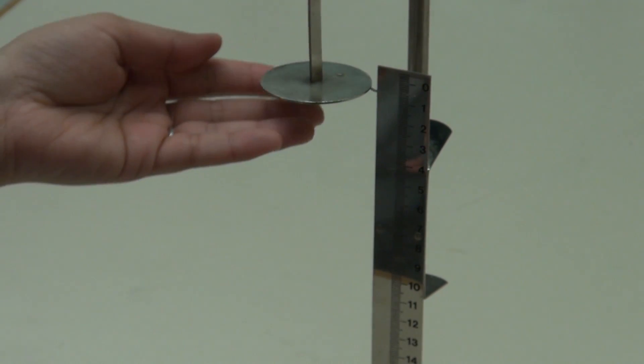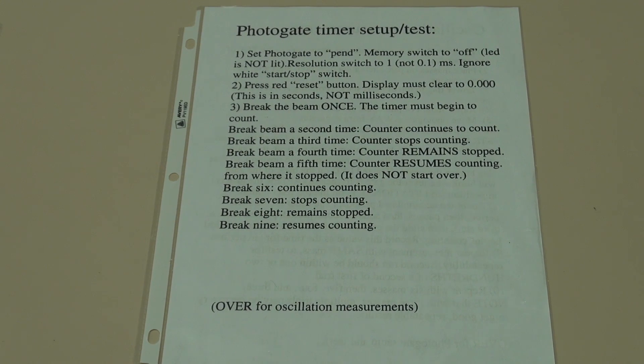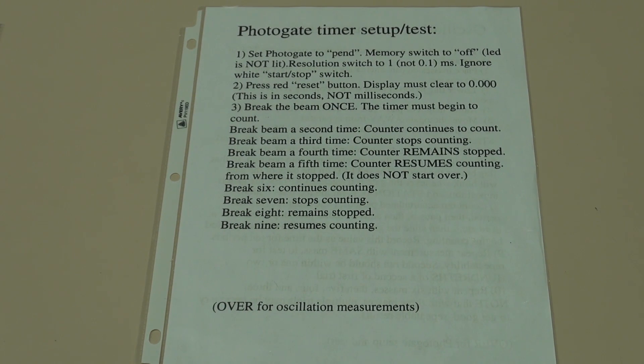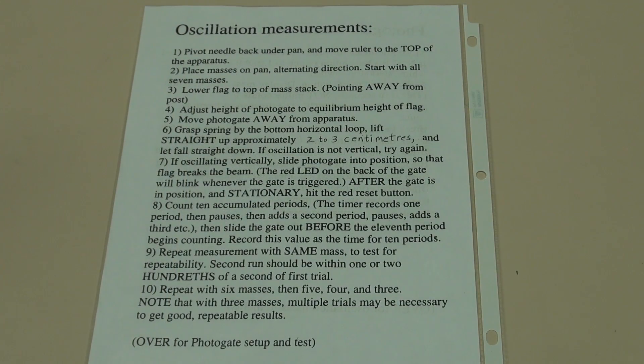The second part of the experiment involves measuring the period of oscillation of the mass spring system. In the lab you will be provided with the sheet of instructions for setting up and testing the photo gate as well as for using it to measure the oscillation period.